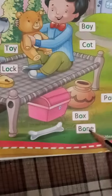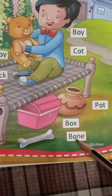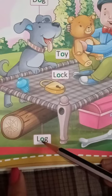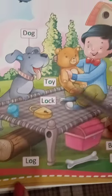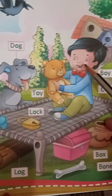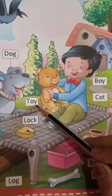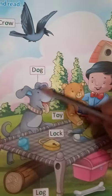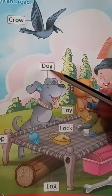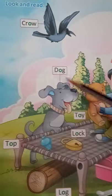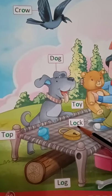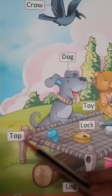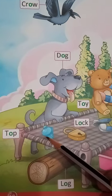This is B-O-N-E. Bone. L-O-G. Log. And here, what is in the hand of the boy? This is a T-O-Y. Toy. This is a D-O-G. Dog. This is L-O-C-K. Lock. And here T-O-P. Top.